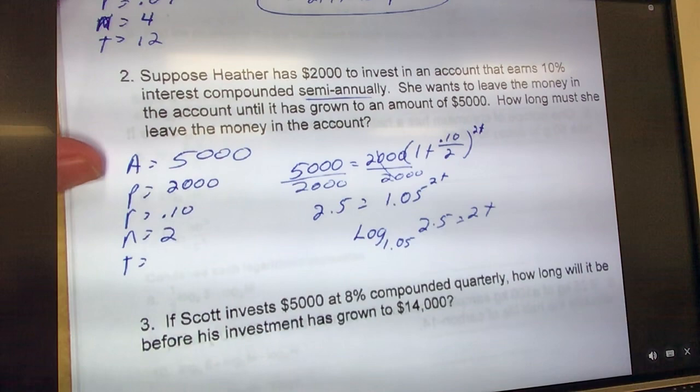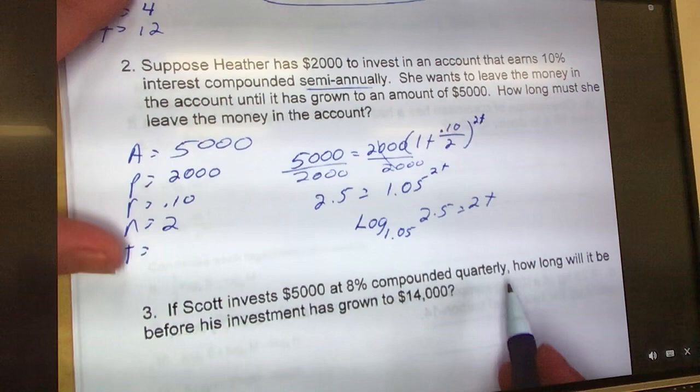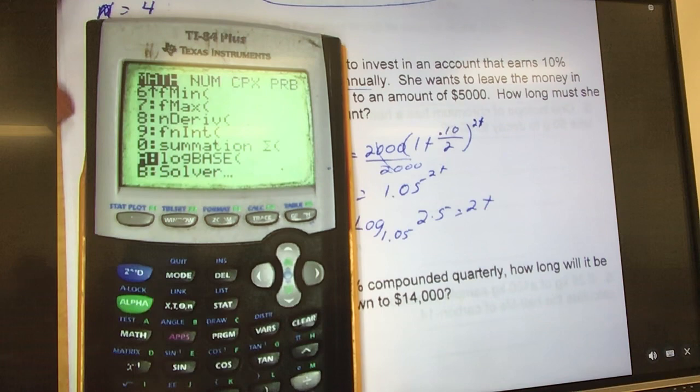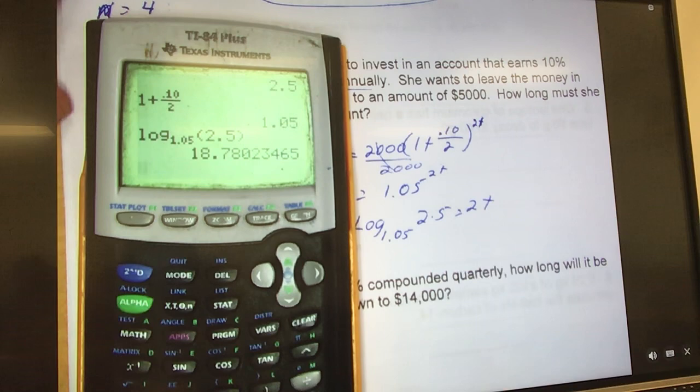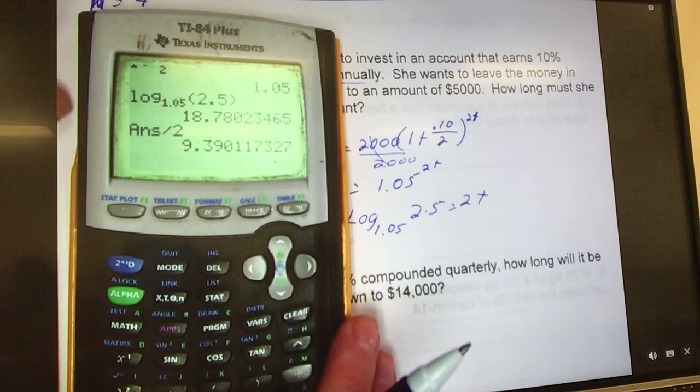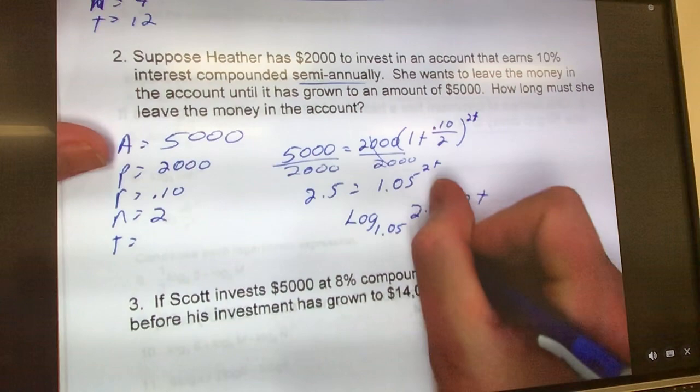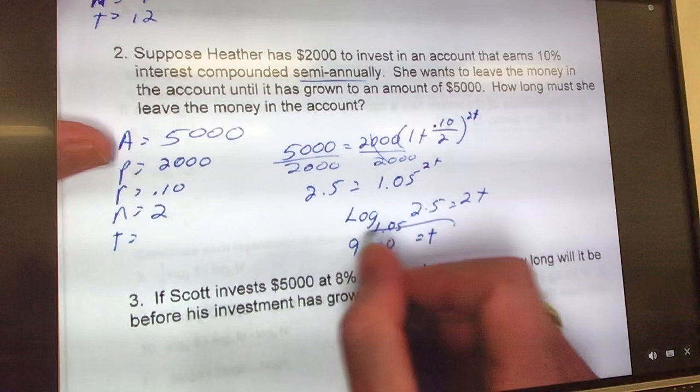So now I can take that, convert it to a log. So what's the base? The base is 1.05, right? So the base is the exponent, so that's log base 1.05, and then 2.5 equals 2T. Remember, our x-find always goes to the opposite side. So I take and I put that in my calculator: Math, arrow up twice, log 1.05, 2.5. Hit enter, and then I'm going to divide it by 2, right, to solve for T. So I'm going to divide by 2, and that tells me T is 9.390. That's how much time you must leave that in there.